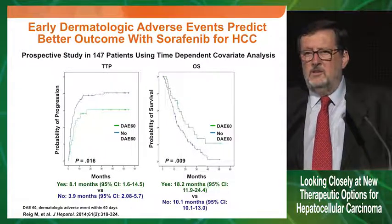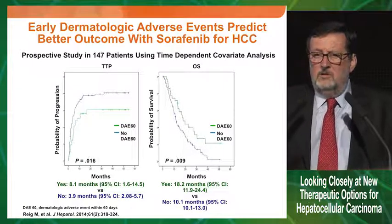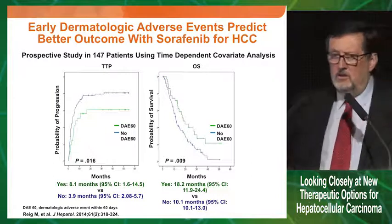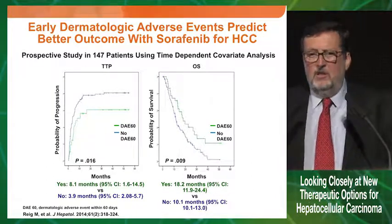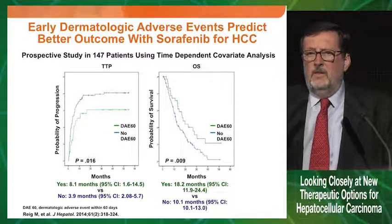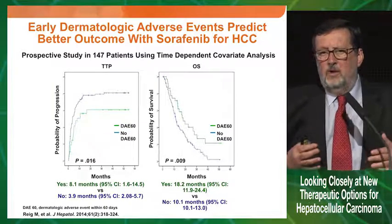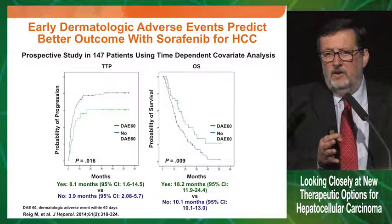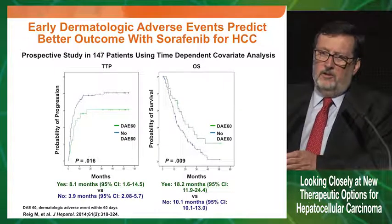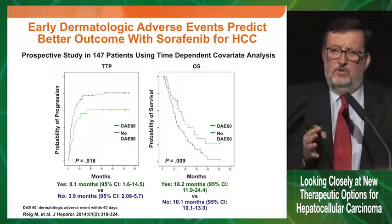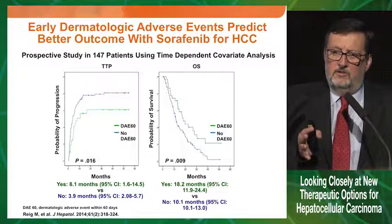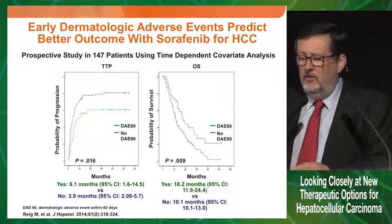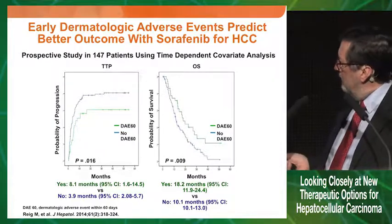Doing strategies to reduce adverse events by going to low dose may cause us to miss the benefit associated with those adverse events. This is something that now must be implemented carefully, because we have sorafenib effective in first-line and we already know the results of Regorafenib. We have to secure what is tolerant and what is not, so that we benefit from sorafenib first, adjust doses, and then get the benefit of Regorafenib later.